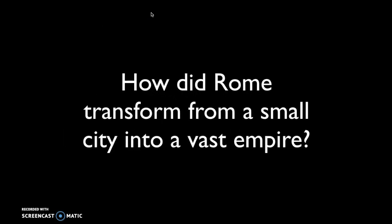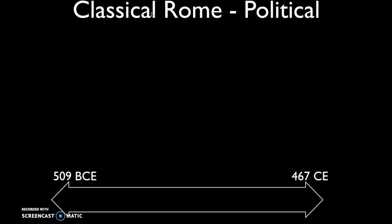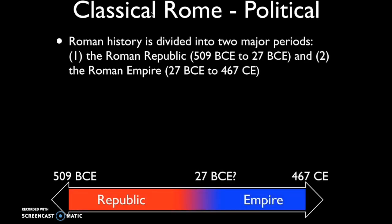This leads us to our next big question: how did Rome transform from a small city into a vast empire? When talking about Roman history, we can break it down into two periods. There is the period of the Roman Republic, which lasts from around 509 BCE to approximately 27 BCE, and the period of the Roman Empire, which lasts from 27 BCE to 467 CE. That date of 27 BCE is not set in stone — there are certainly debates about when Rome actually becomes an empire.